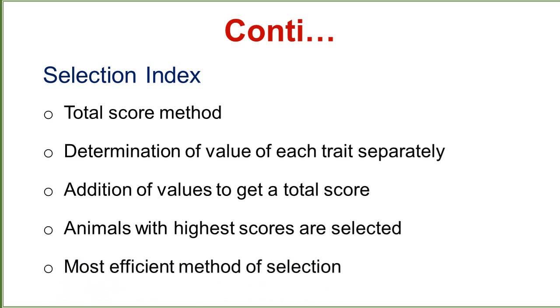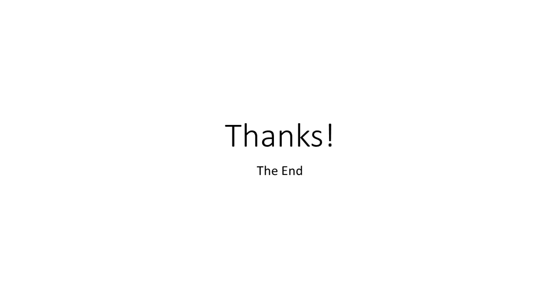Selection index is a more secure method of selection than tandem selection or culling. That's all about today's lecture. If you have any questions, you may ask in the comments. Please like, subscribe, share, and comment. Thank you very much.